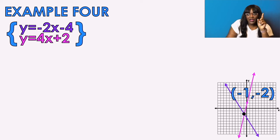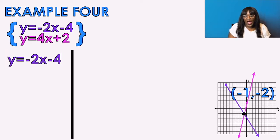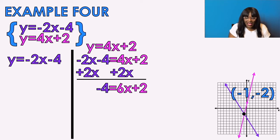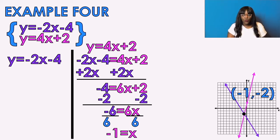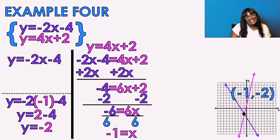Example number four: both equations are already isolated. Y equals negative 2X minus 4 — I already know what Y equals. In the other equation, all I have to do is take out the pink Y and replace it with the purple expression. When both equations are already isolated, we're doing simple algebra — just get X by itself. X equals negative 1. Does that match the graph? Yes. So I take negative 1 and plug it into the purple equation: negative 2 times negative 1 minus 4 gives Y equals 2 minus 4, so Y equals negative 2. X is negative 1, Y is negative 2.